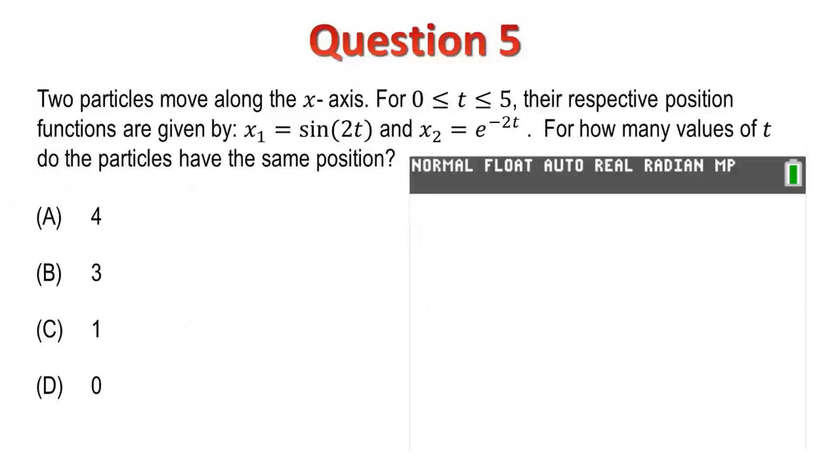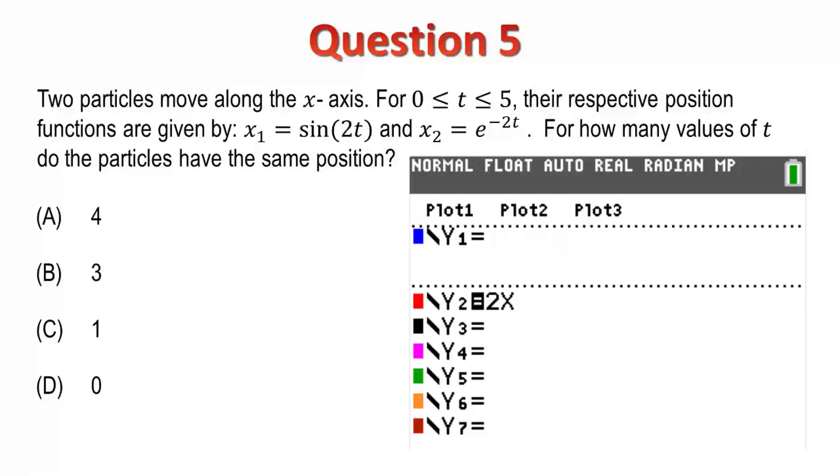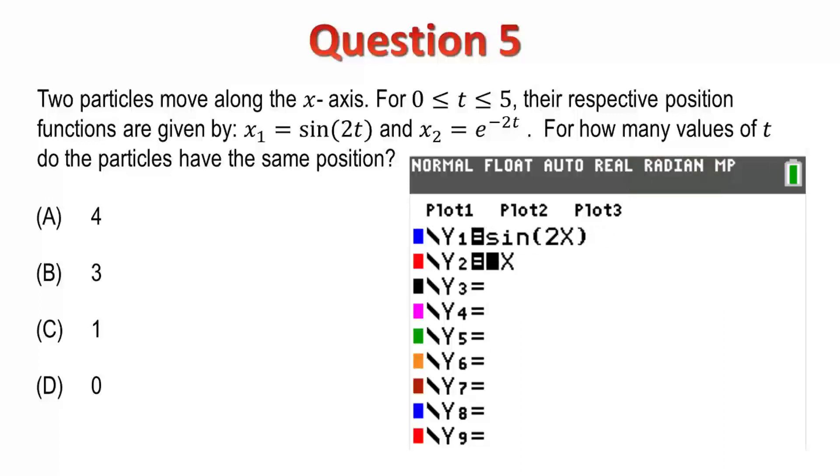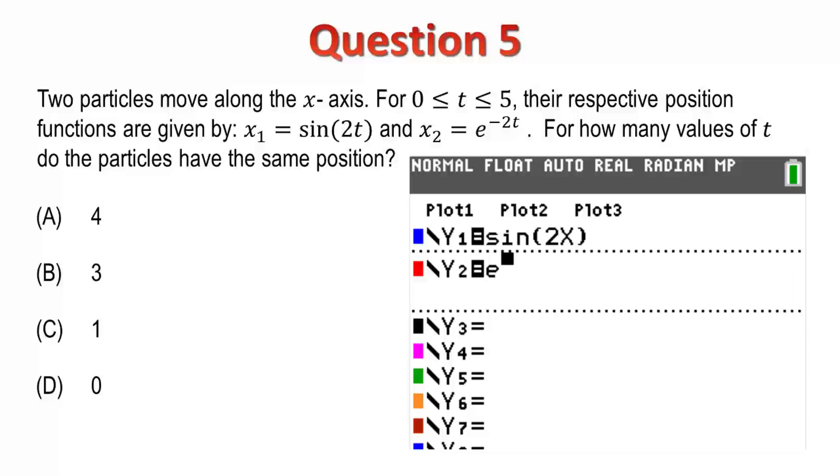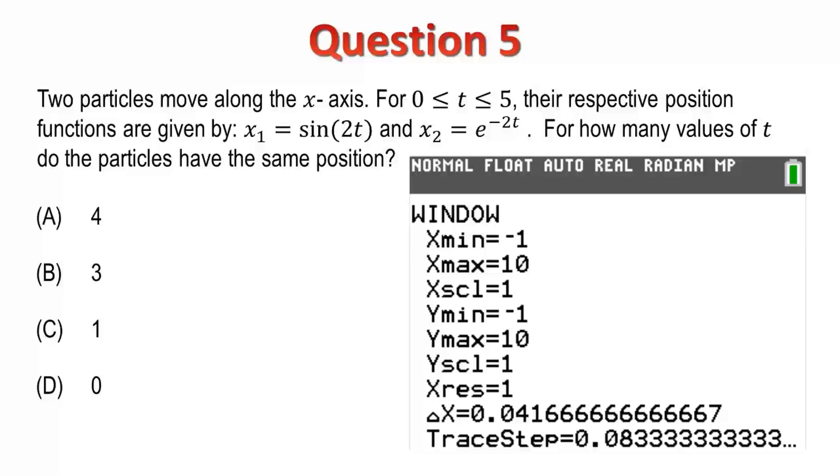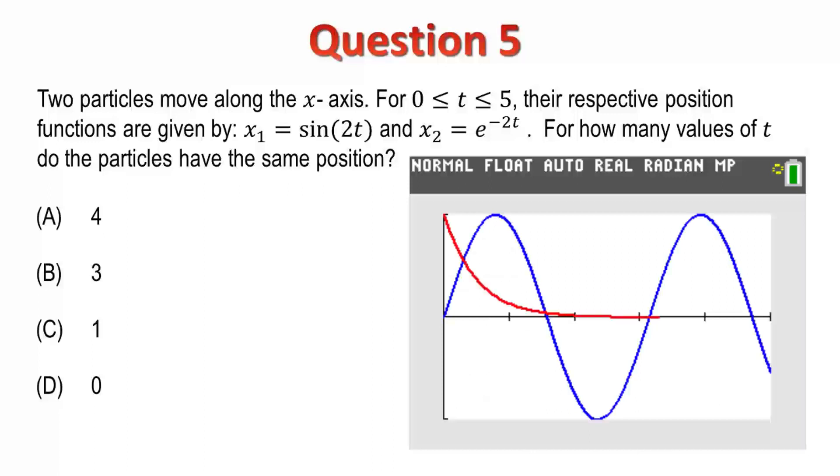Question 5. Two particles move along the x-axis for a period of 5 seconds, with their respective positions defined by x1 and x2. We are asked to find how many times the particles have the same position. To answer this question, graph the two functions. We could restrict the domain, but for this question it will be more efficient to simply adjust the window settings. Notice that we are asked to find how many times the particles intersect, not when or where. From the graph we can see that the two particles are at the same point on four separate occasions. So I'll select Option A.